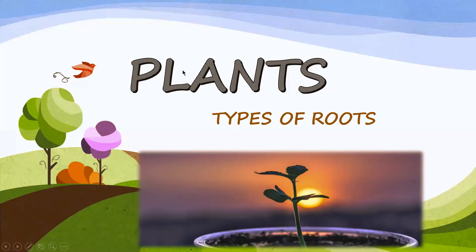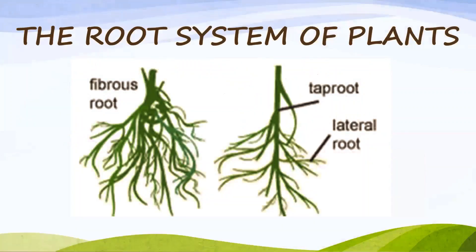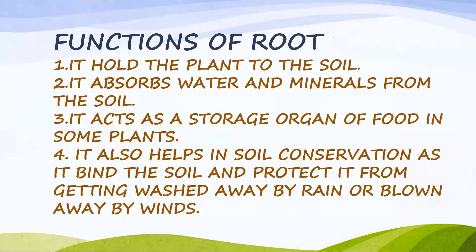Hello everyone, today we will learn about types of roots. The root system of a plant is mainly of two types: fibrous root and tap root. To discuss about fibrous root and tap root, first we have to know about the functions of root.